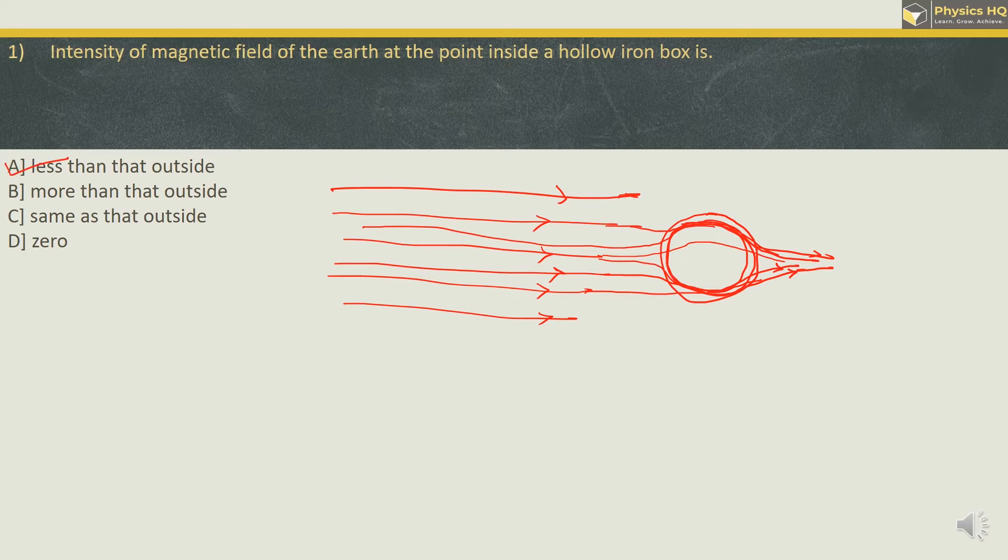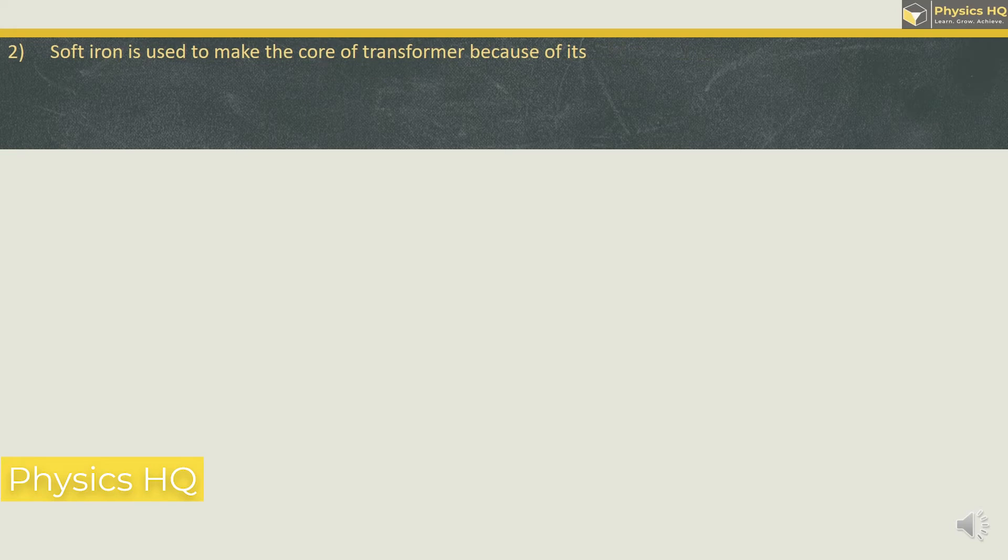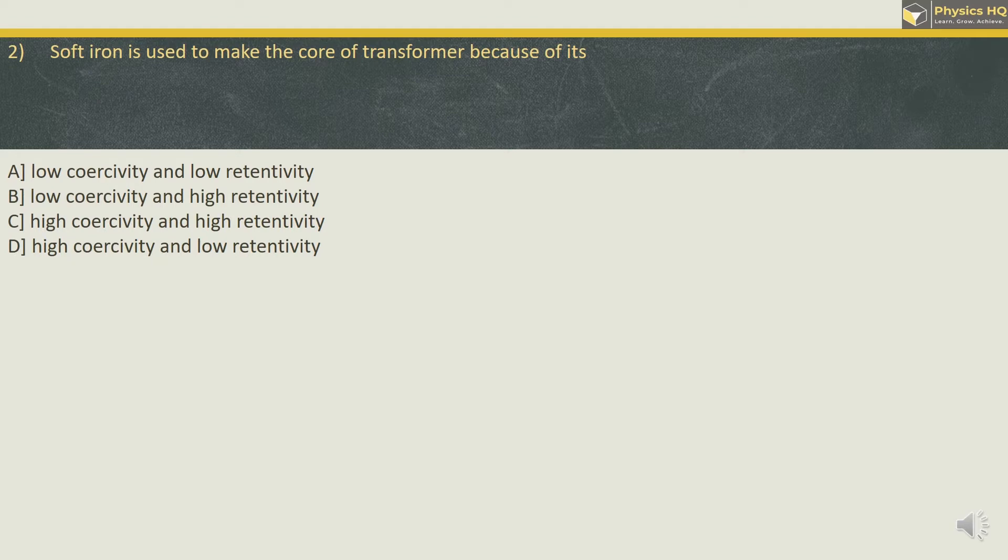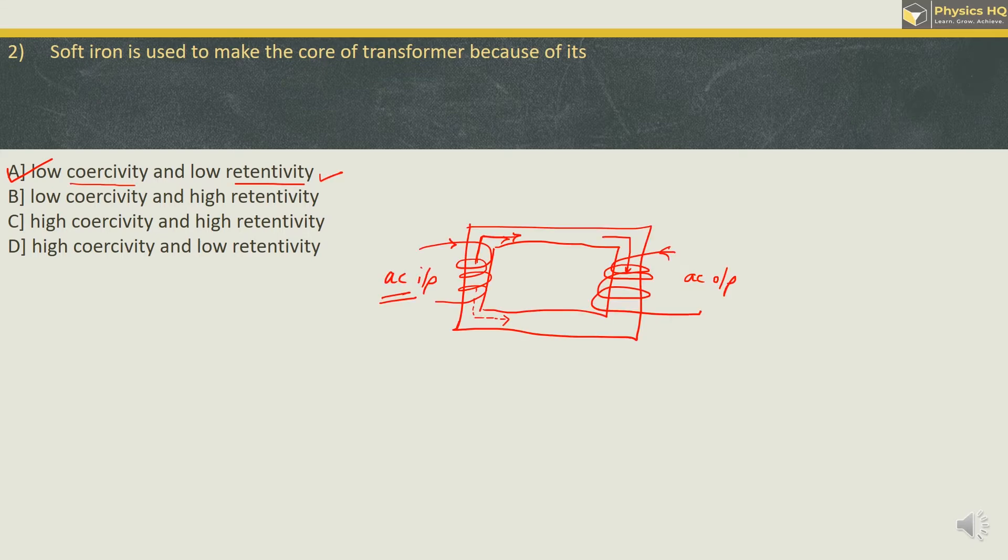Let us check out the next MCQ. Soft iron is used to make the core of transformer because of its low coercivity and low retentability. Let us check out the next MCQ.